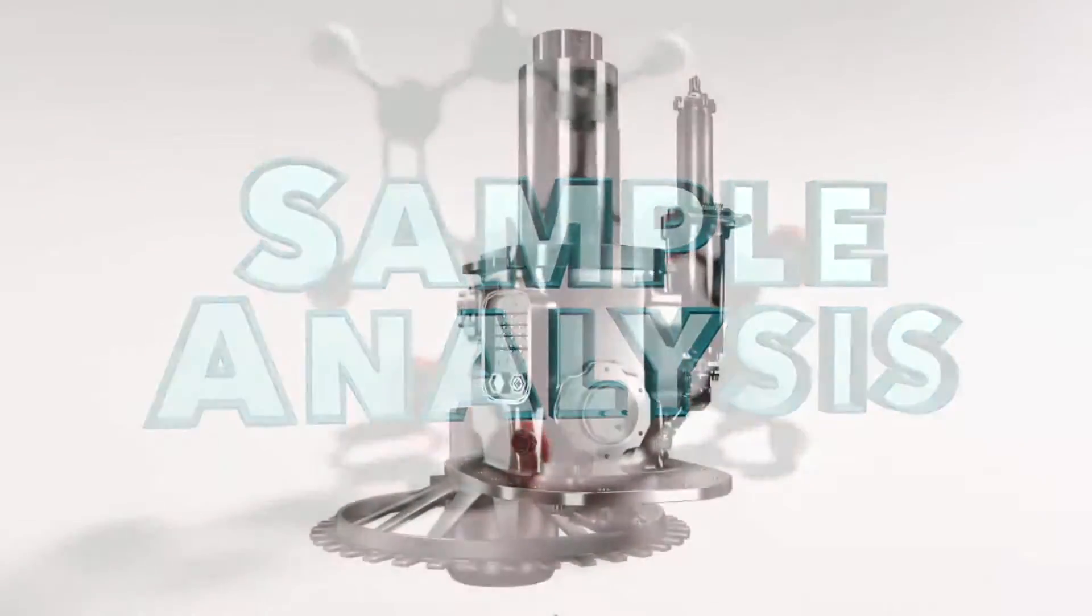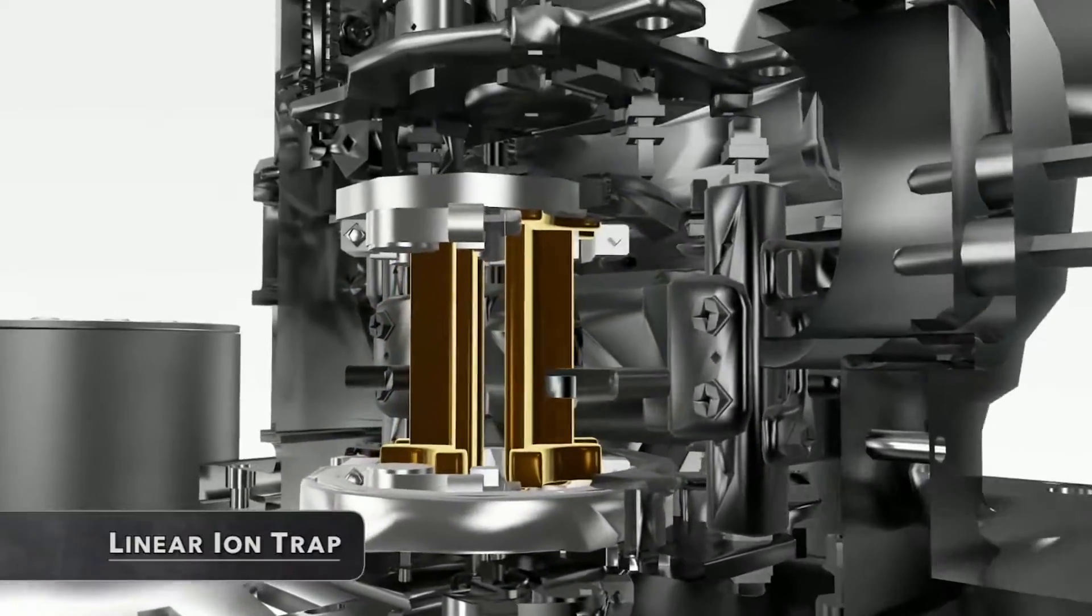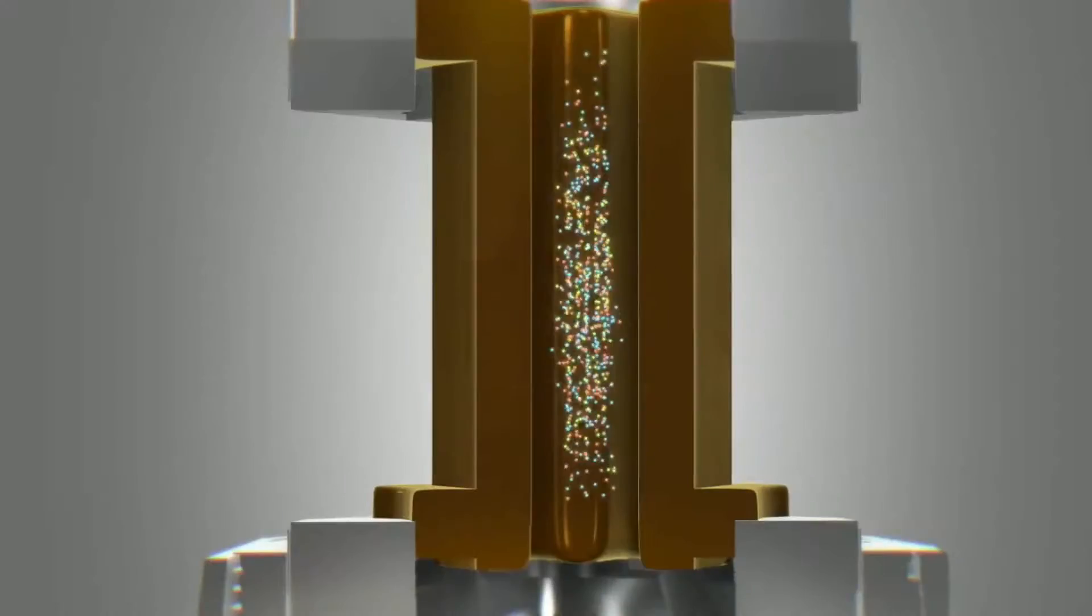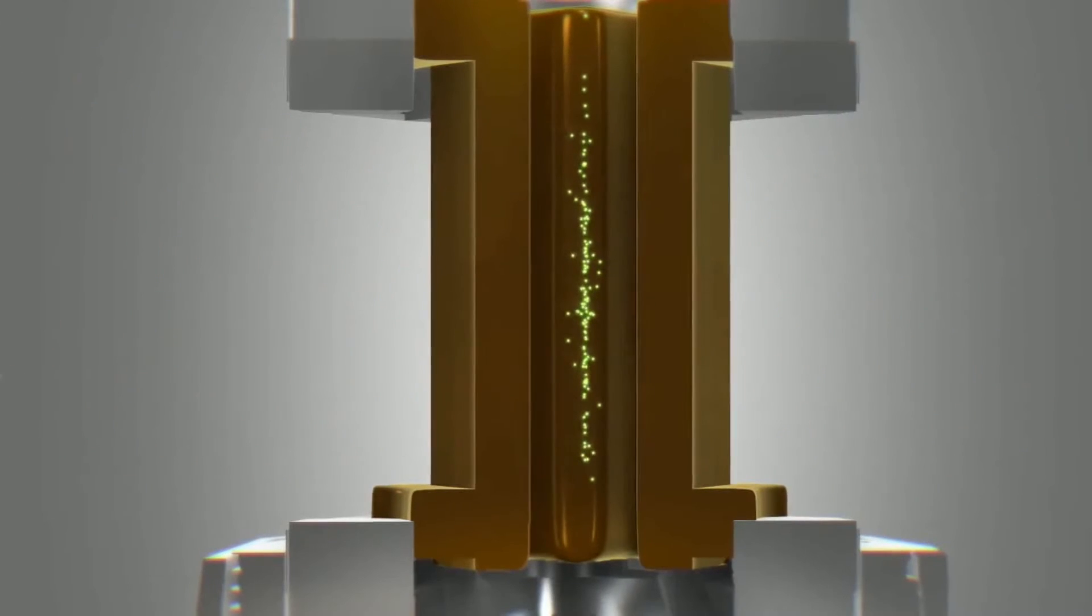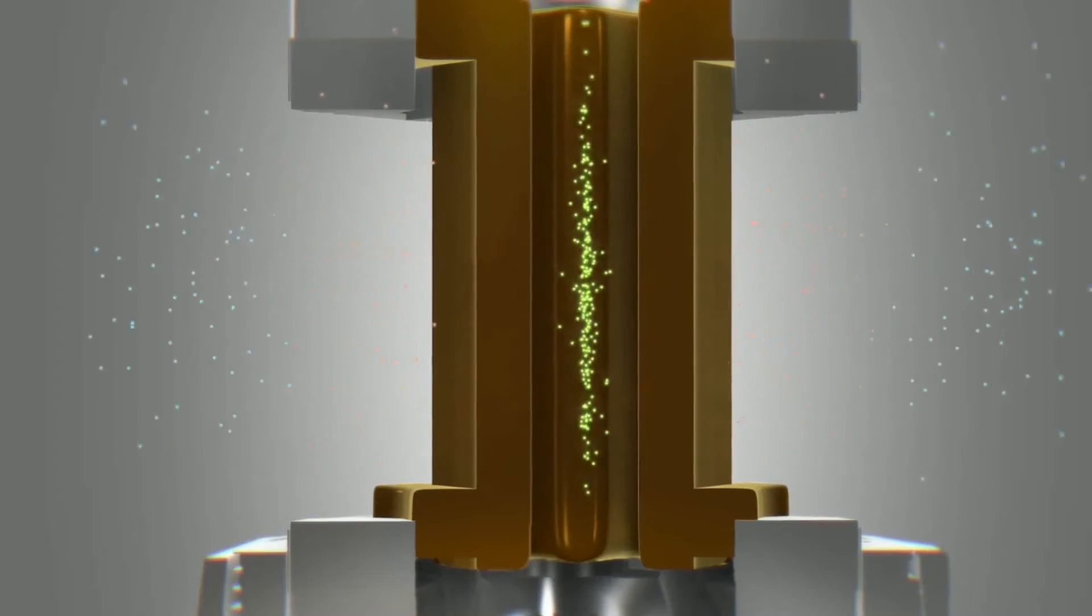MOMA's linear ion trap is another first for the red planet. It will scan for the fingerprints of life by fusing techniques normally confined to laboratories on Earth. One technique, called SWIFT, repeatedly ejects unwanted molecules from the trap. Over time, this builds up molecules of interest, improving detection.